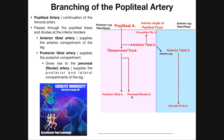The posterior tibial artery and peroneal arteries both remain on the posterior part of the leg. The posterior tibial artery is going to be more medially placed — recall that the tibia is the medial bone. The fibula is the lateral bone, so the peroneal or fibular artery is going to be more on the lateral side, but still posterior.